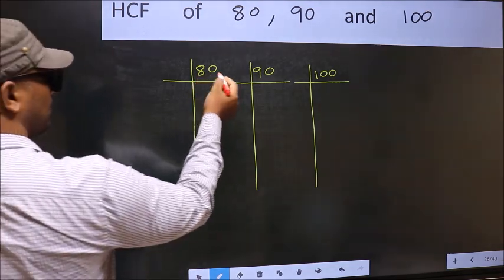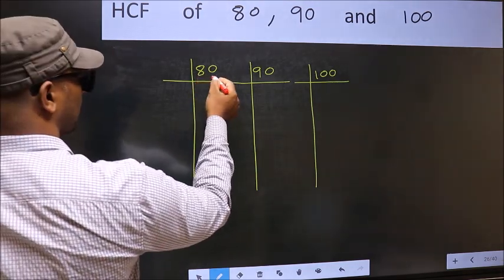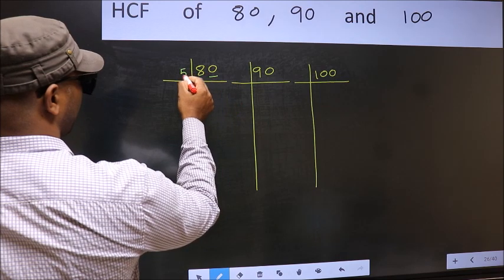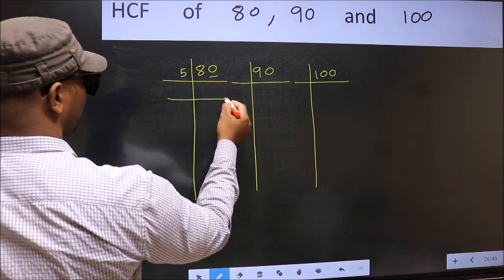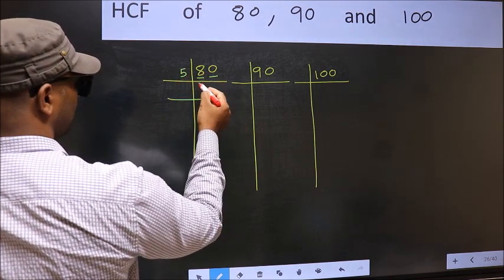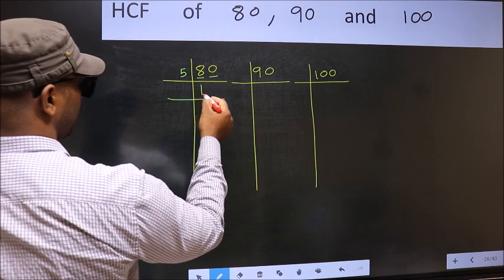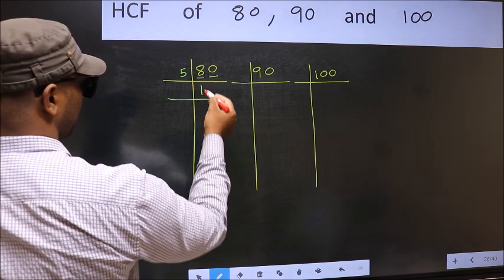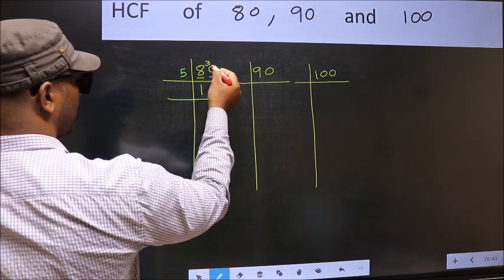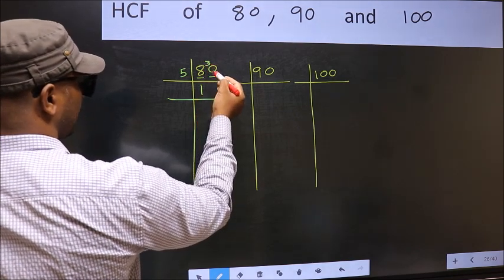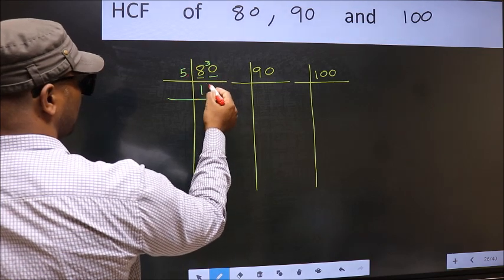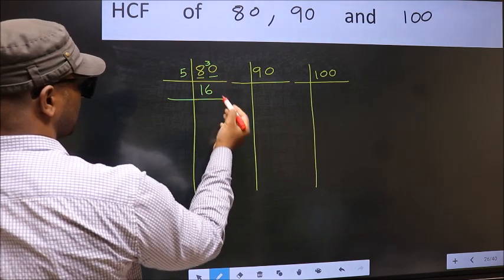For 80, the last digit is 0, so we divide by 5. The first digit is 8; the closest number to 8 in the 5-times table is 5 once 5. 8 minus 5 is 3, carried forward to give 30. In the 5-times table, 5 sixes are 30.